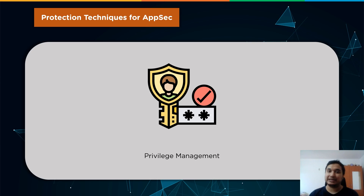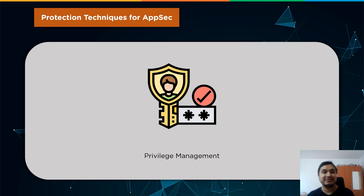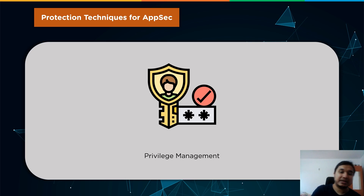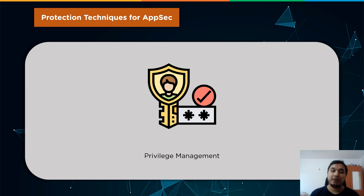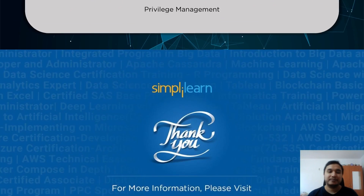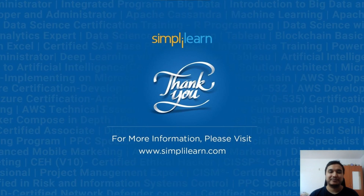The least privilege principle is absolutely critical for two reasons. First, hackers may compromise less privileged accounts, and ensuring they do not acquire access to highly sensitive systems is critical. Second, internal dangers are equally harmful as external adversaries — if insiders go rogue, it's critical to ensure they never have more power than they need, minimizing the harm they may be able to cause to the organization.